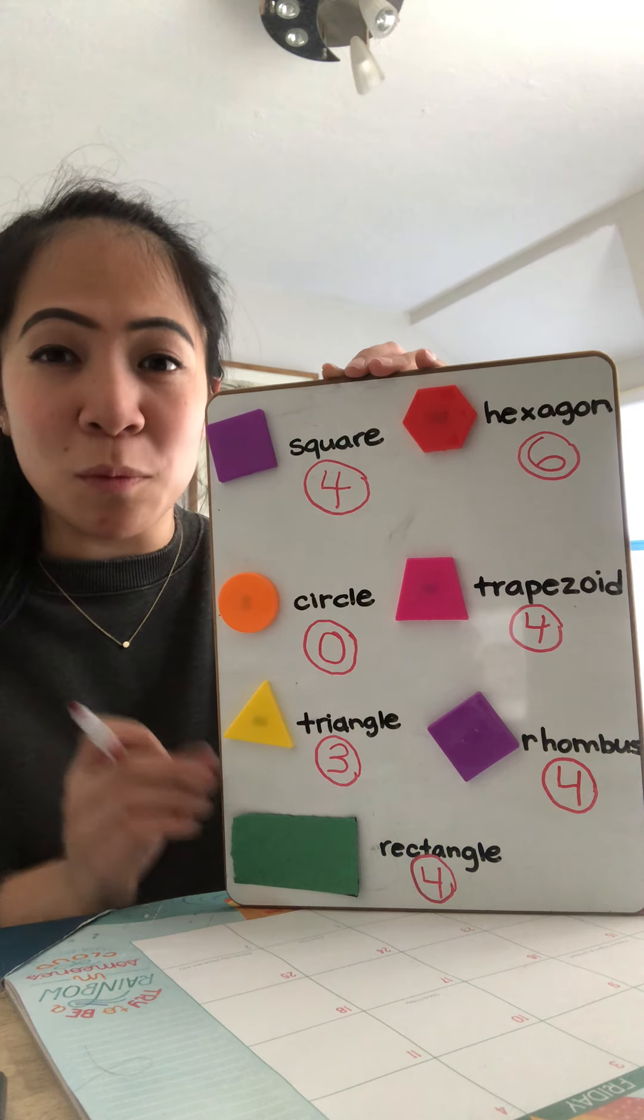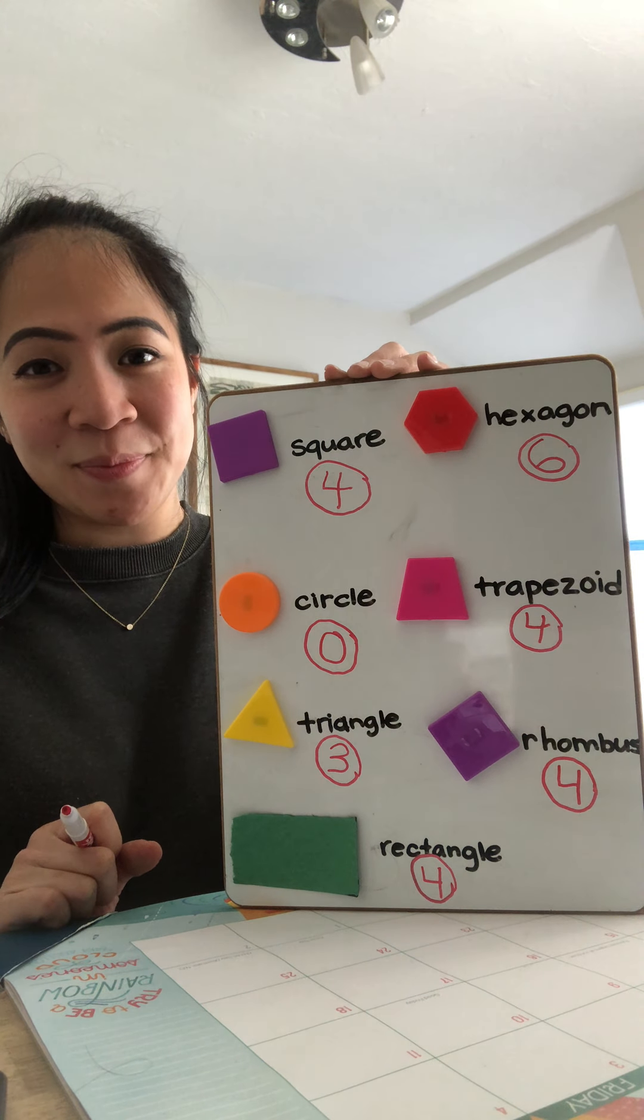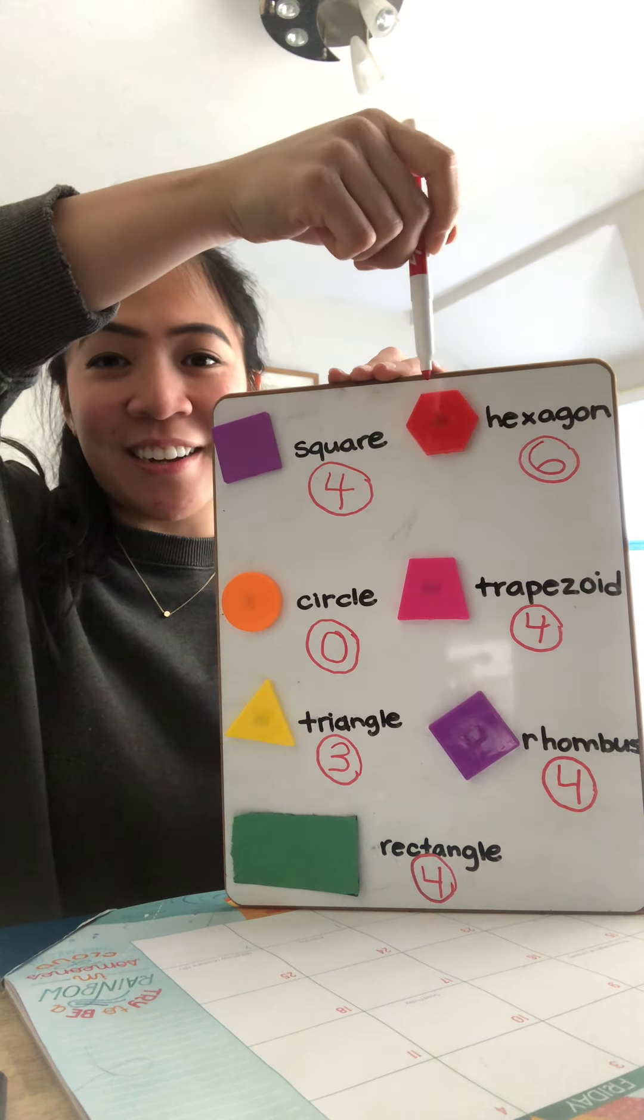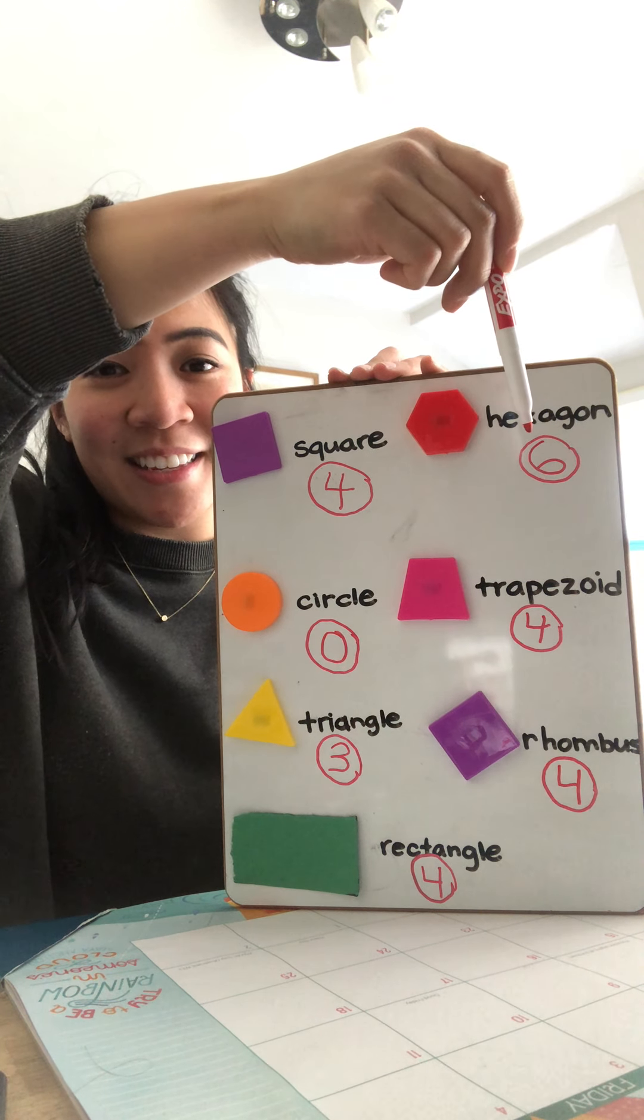Now, can anyone tell me which shape has the most sides? The hexagon. That's right. The hexagon has how many sides? Six.